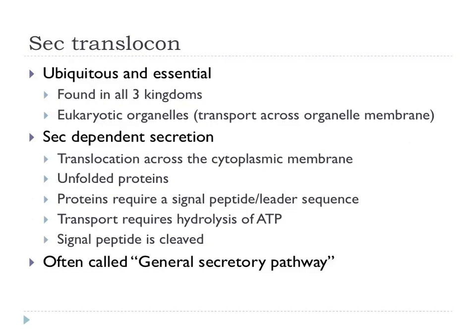Proteins that go through the Sec system have to be unfolded, so they are often going through the system quite soon after they've been synthesized — there may even be coupling of protein synthesis to export. These proteins have a characteristic signal peptide, or leader sequence, which targets them to the system. It is very easy to recognize in terms of bioinformatic signatures. Transport across this system requires hydrolysis of ATP, and as part of the secretion mechanism, the signal peptide gets cleaved off.